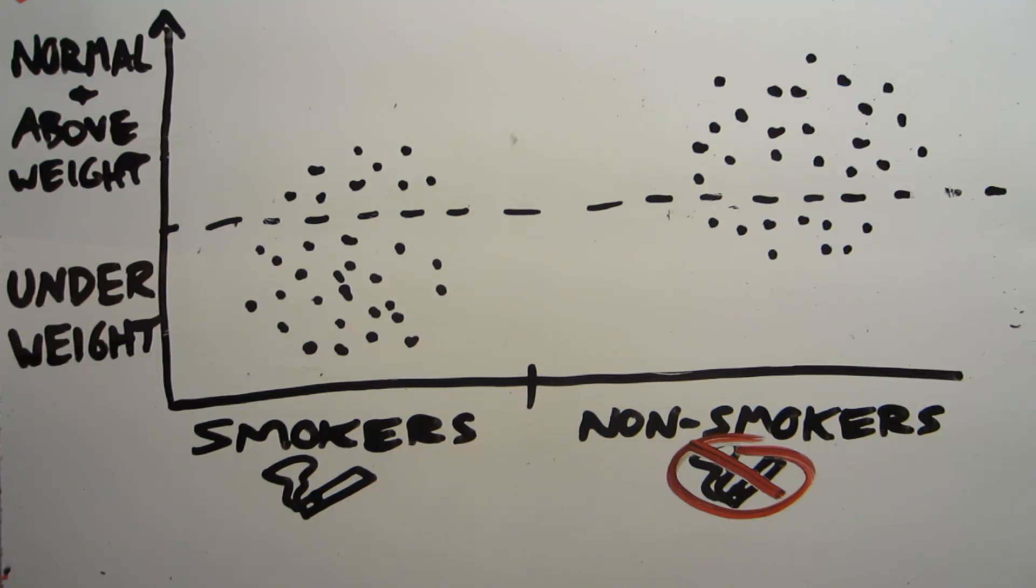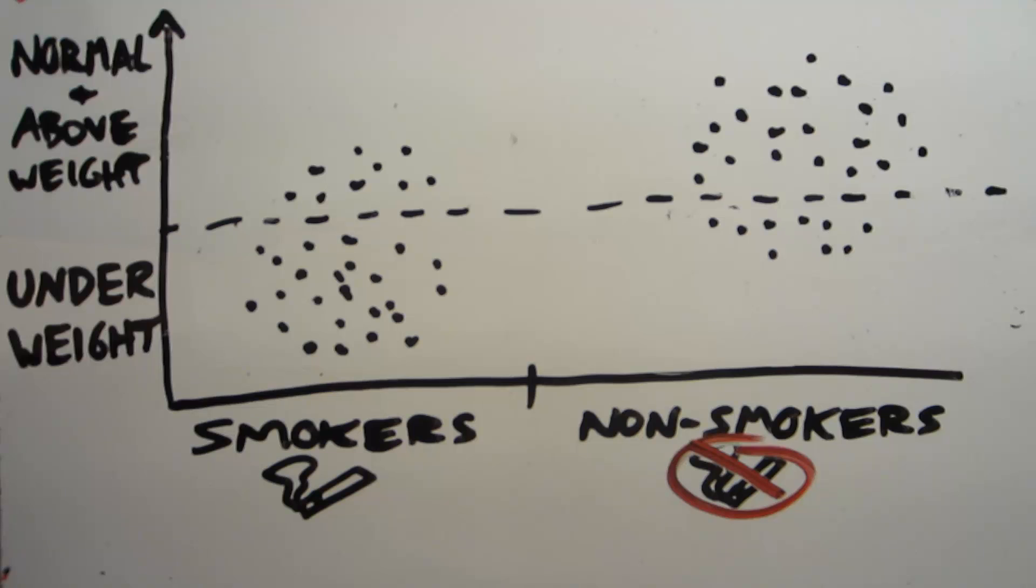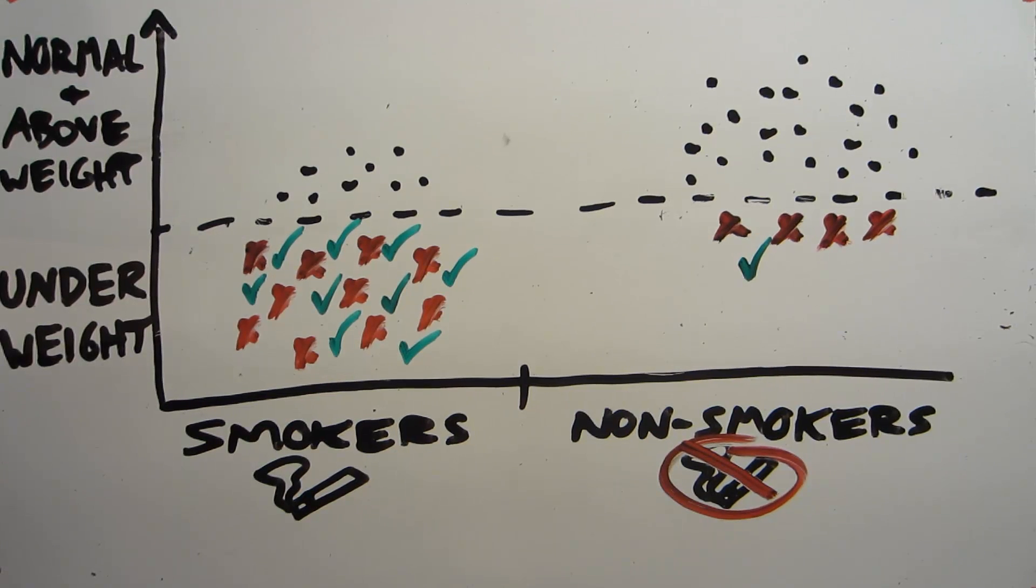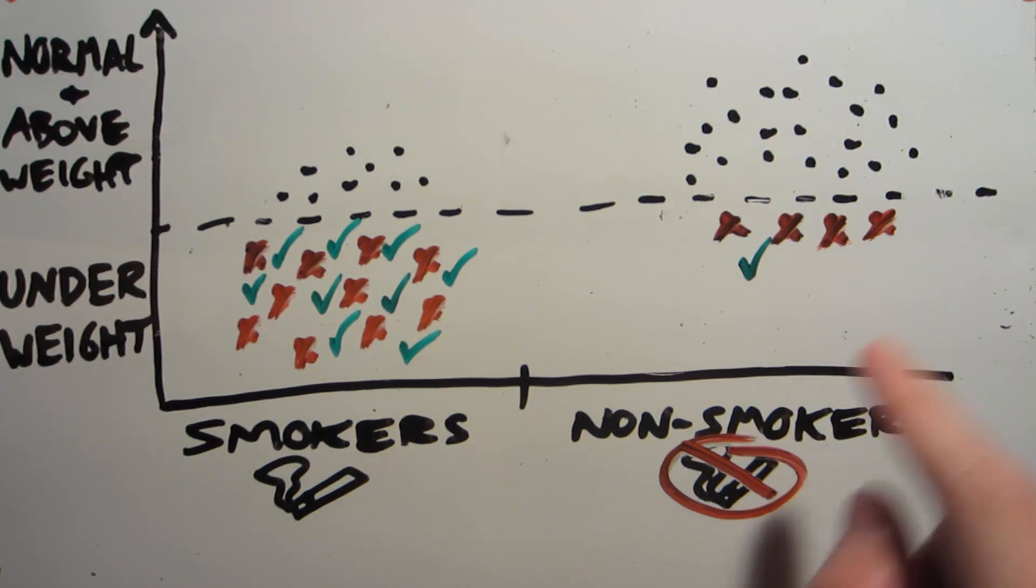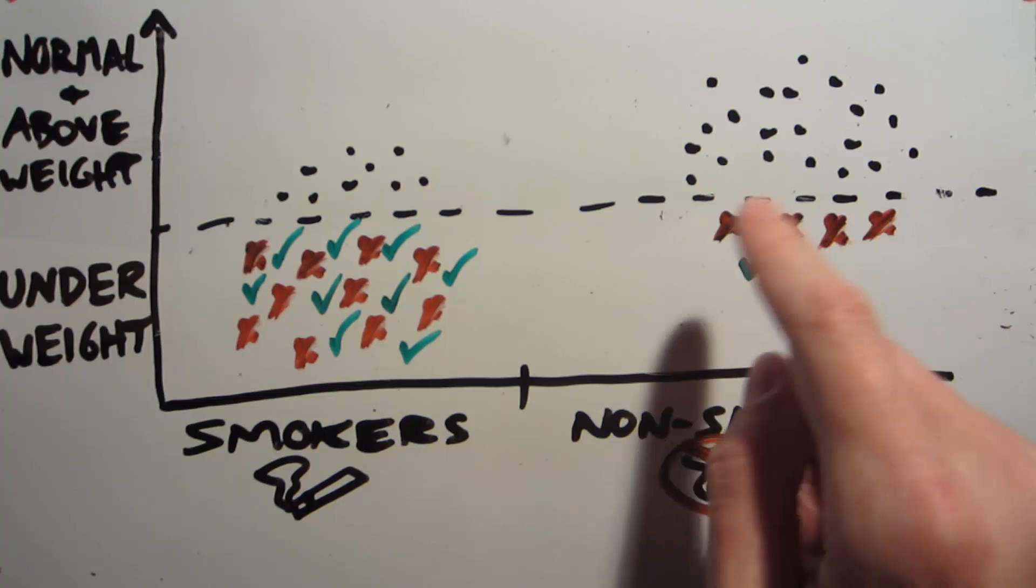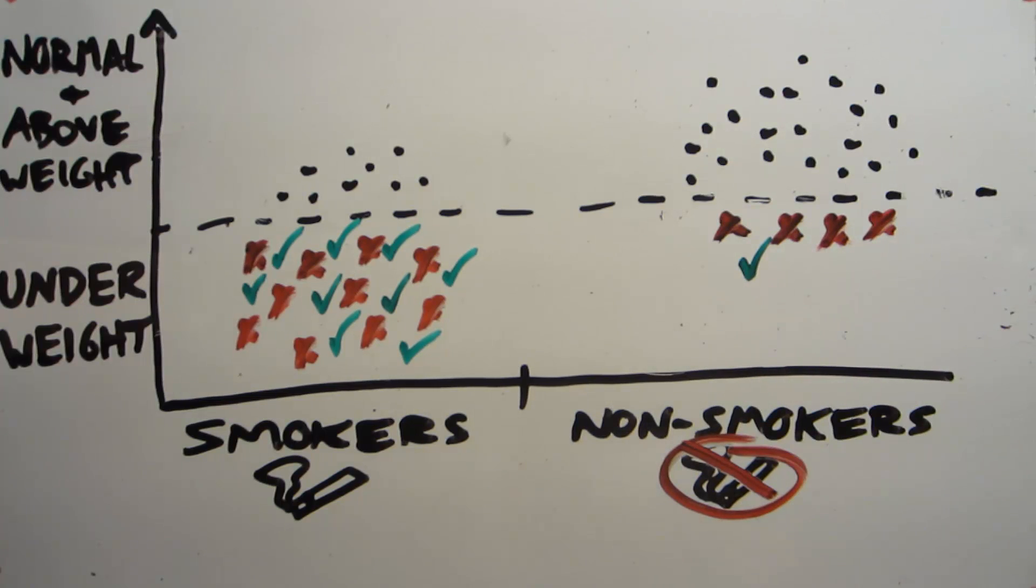The story we can tell is something like smoking causes your baby to be generally weaker and more likely to be underweight at birth. But non-smokers, when they do have underweight babies, maybe it's due to some specific and damaging health problem, which is more likely to result in the mortality of the baby. So overall, non-smokers underweight babies are at higher risk.